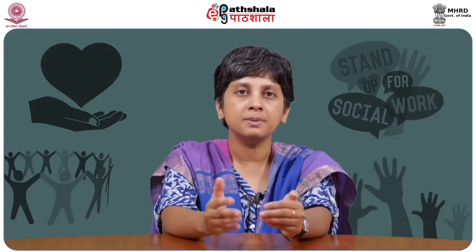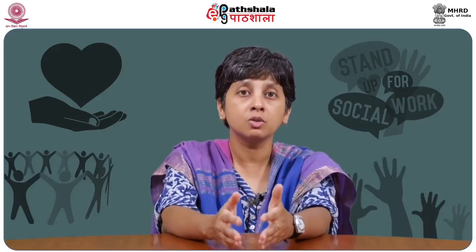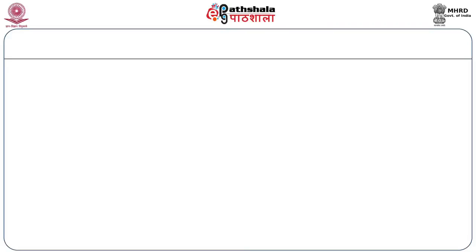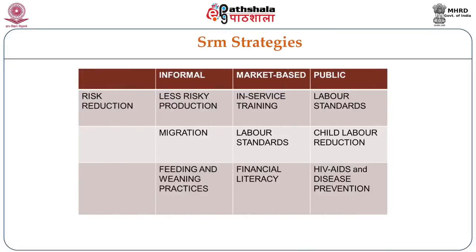If we tabulate the strategies of SRM and put them in different columns — in terms of both types of strategies (risk reducing, mitigating, or preventive) and the source from where these SRM instruments would emerge — we can create a table like this. You can fill in your own examples after making a table like this, to understand the kind of strategies that exist in the real world and categorize them according to this framework.